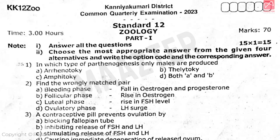Question 1: In which type of parthenogenesis are only males produced? The answer is option A. Question 2: Find the wrongly matched pair. The answer is option B.